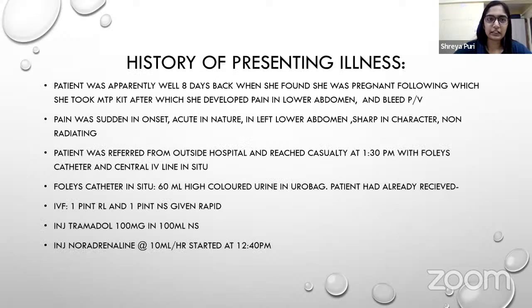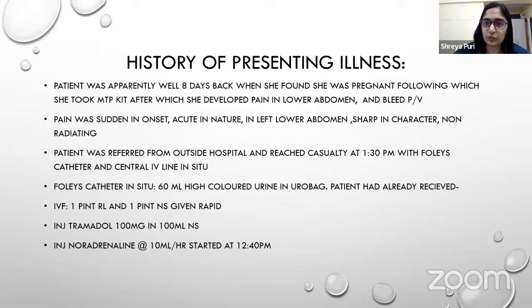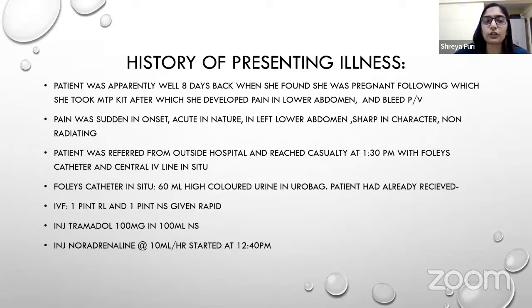History of presenting illness: The patient was apparently well eight days back when she found out she was pregnant, following which she had taken an MTP kit. She then developed pain in the lower abdomen, more on the left side, and bleeding per vagina. The pain was sudden in onset, acute in nature in the left lower abdomen, sharp in character and non-irradiating. The patient was referred from an outside hospital and reached our casualty at 1:30 pm with a Foley's catheter and central IV line in situ.